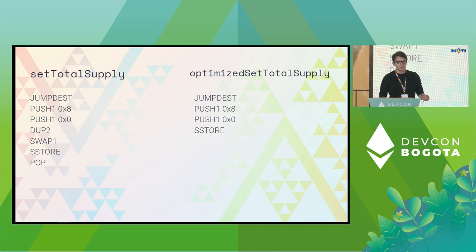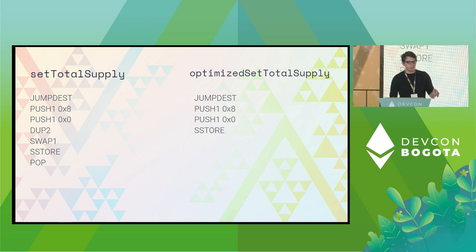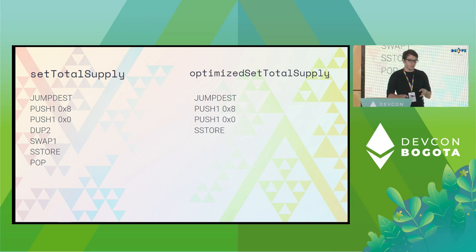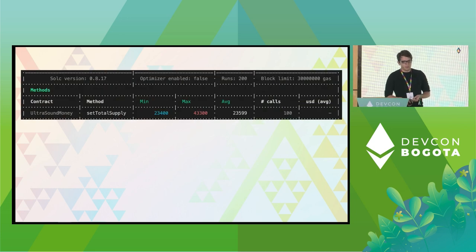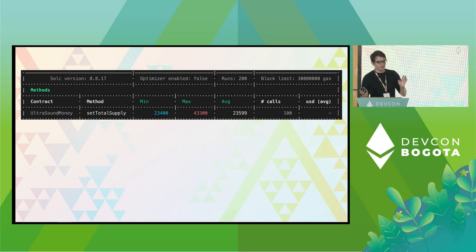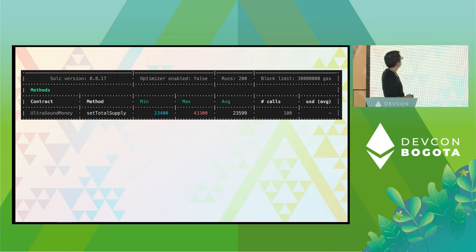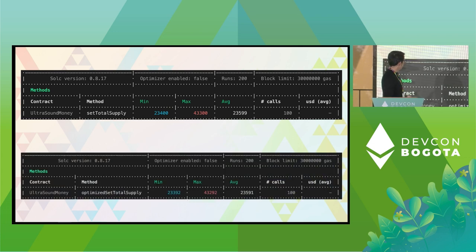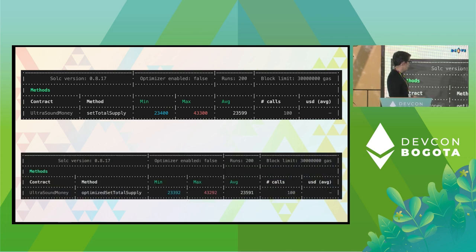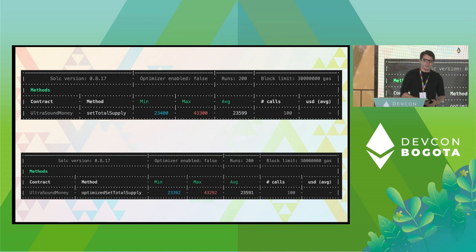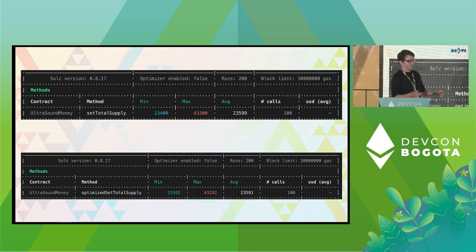We know opcodes cost gas, and we can see that setTotalSupply has more opcodes than optimizeSetTotalSupply. Using hardhat gas reporter running each function 100 times, setTotalSupply averages 23,599 gas and optimizeSetTotalSupply averages 23,591 gas. Looks like we just saved a lot of time and money!